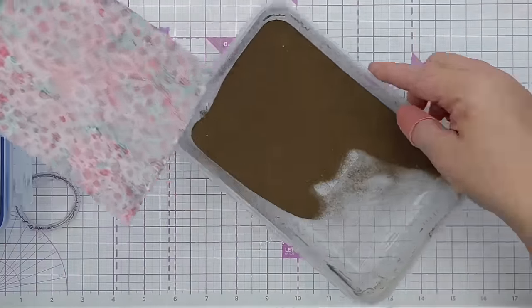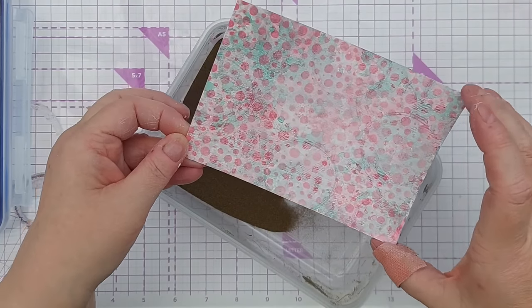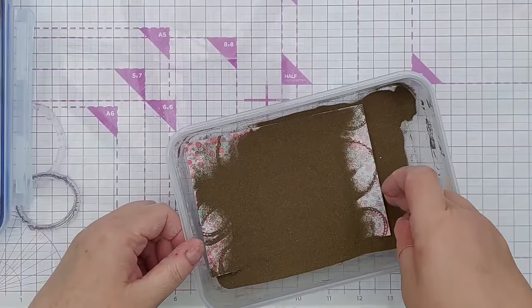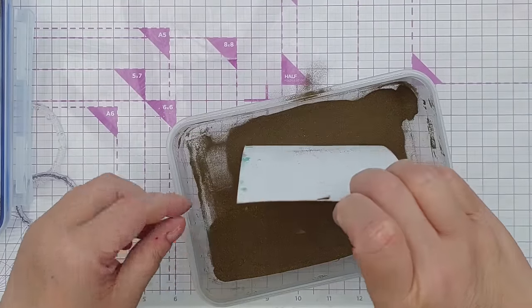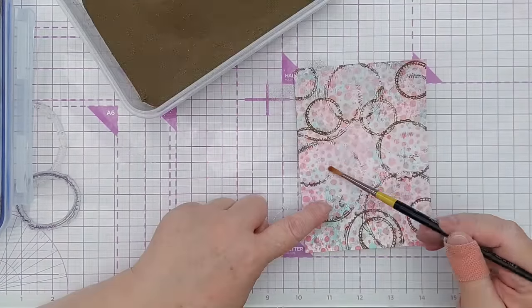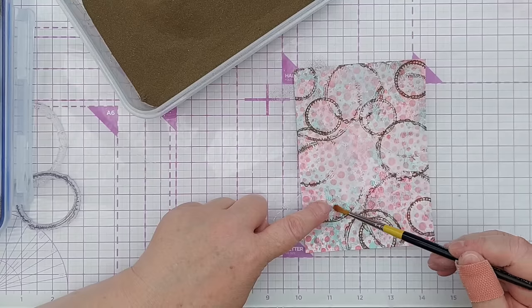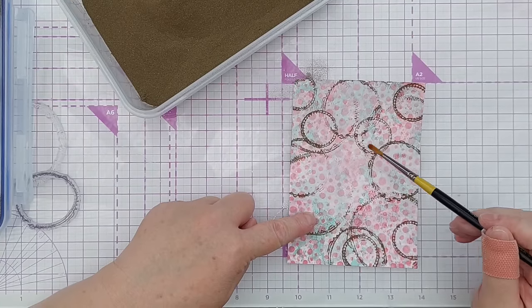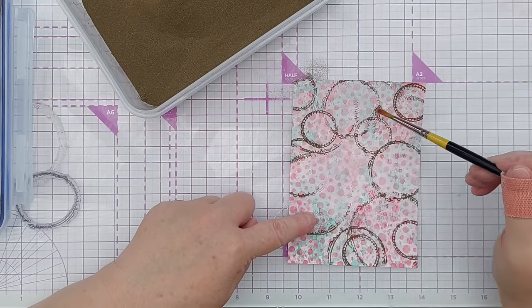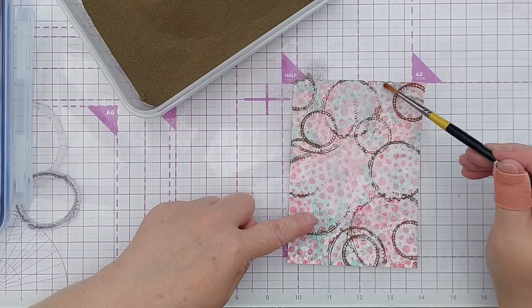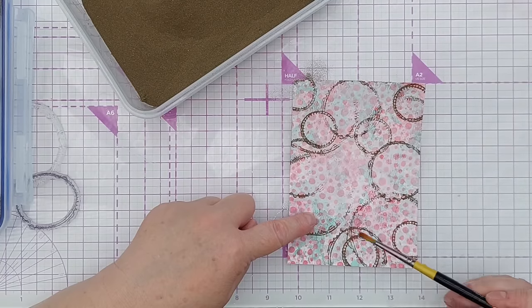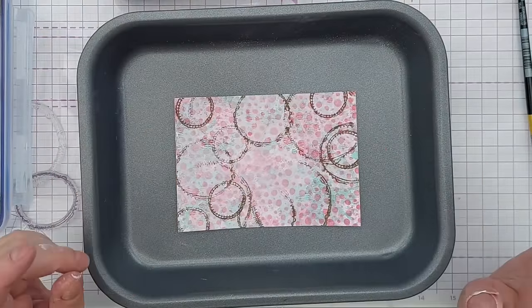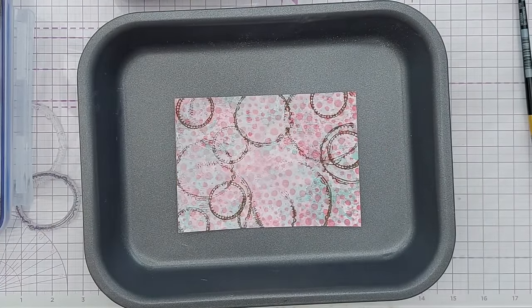Now I'll put that in my gold embossing powder and see what we've got. So there's a few places where it hasn't stuck. But that's okay. I'll just tidy up a little bit. I'm not particularly bothered about perfect impressions. Because this is all going to get cut out and cut down in a minute. So I'll melt this with my heat tool and then add a few more bits over the top, I think.